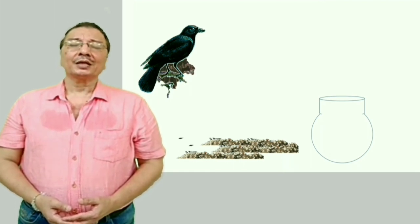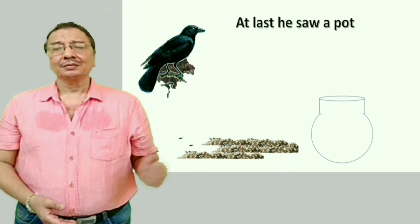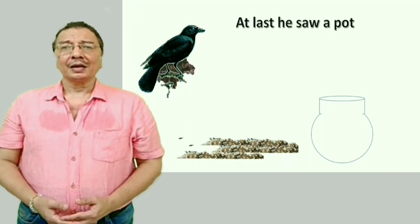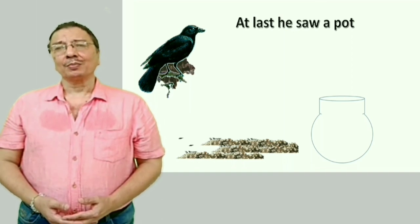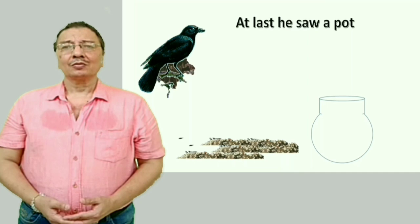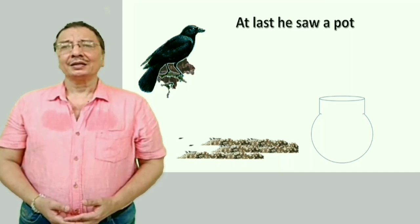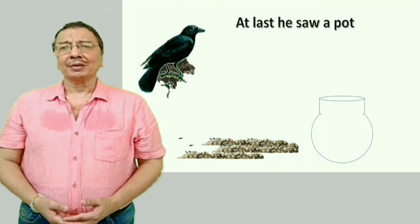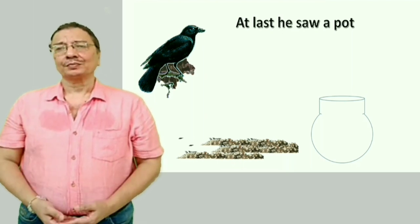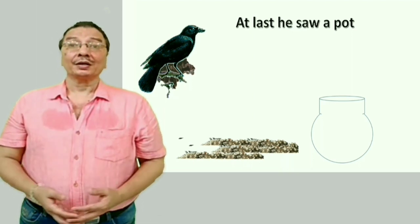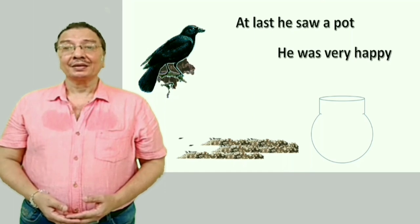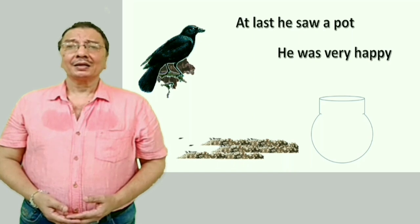Ant mein use ek matka dikha — At last he saw a pot. 'Ant mein' means 'at last'. 'Saw' is the past tense of 'see', meaning dekhna. At last he saw a pot. Vah bahut khush ho gaya — He was very happy.